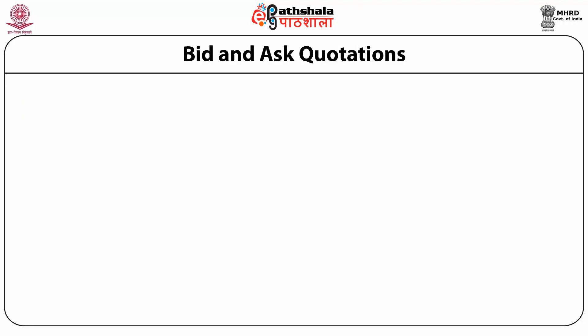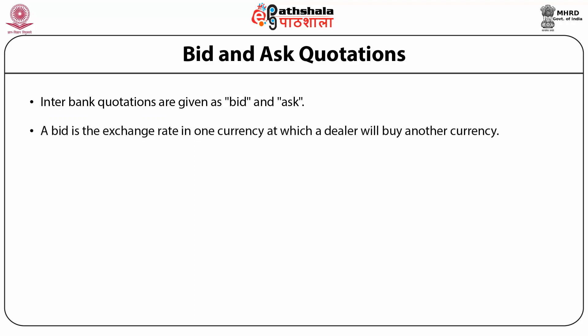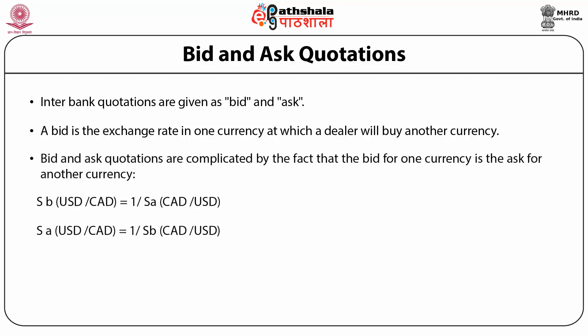Bid and ask quotations: interbank quotations are given as bid and ask. Bid is an exchange rate in one currency at which a dealer will buy another currency. Ask is the exchange rate at which a dealer will sell the other currency. Dealers buy at the bid price and sell at the ask price, profiting from the spread between the bid and ask price. That is, bid is less than ask. Bid and ask quotations are complicated by the fact that the bid for one currency is the ask for another currency.